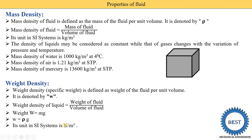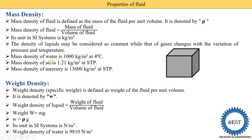The unit of weight density in the SI system is Newton per meter cube, since weight is measured in Newtons and volume in meter cube. The weight density of water is 9810 Newton per meter cube, because rho of water is 1000 and g is 9.81, so 1000 multiplied by 9.81 gives 9810 Newton per meter cube.